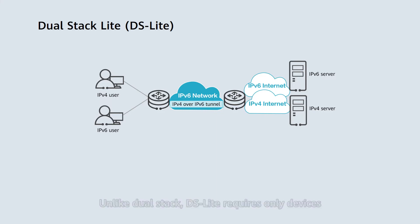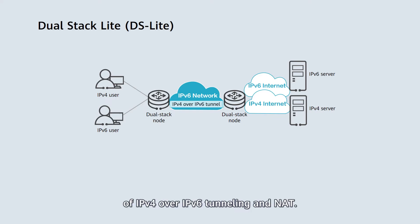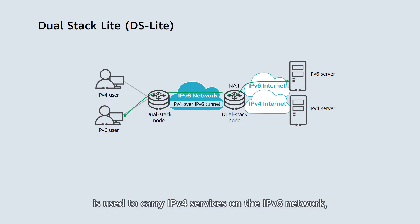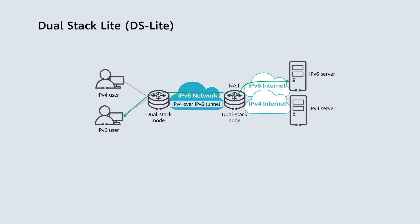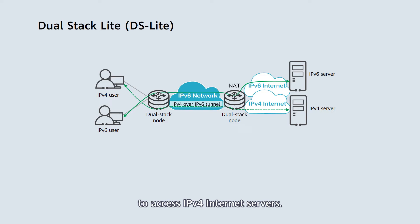DS-Lite requires only devices at the border of IPv4 and IPv6 networks to support dual stack, and intermediate nodes to support only IPv6. DS-Lite is a combination of IPv4 over IPv6 tunneling and NAT. IPv6 networks can directly carry IPv6 services, allowing IPv6 users to access IPv6 internet servers. IPv4 over IPv6 tunneling is used to carry IPv4 services on the IPv6 network, and NAT is performed on the CGN devices to translate between public and private network addresses, so that IPv4 users can traverse the IPv6 network to access IPv4 internet servers.